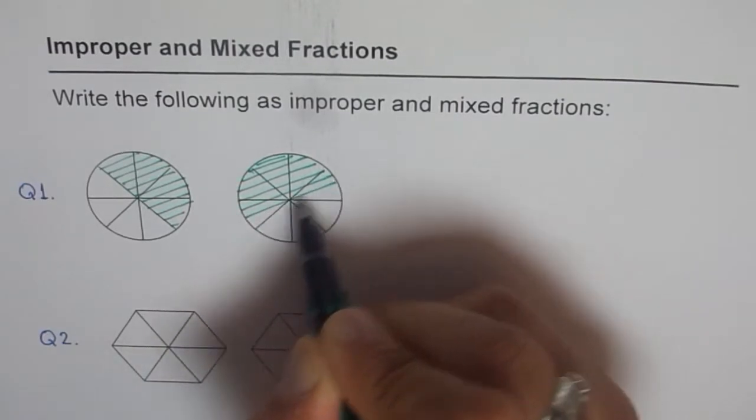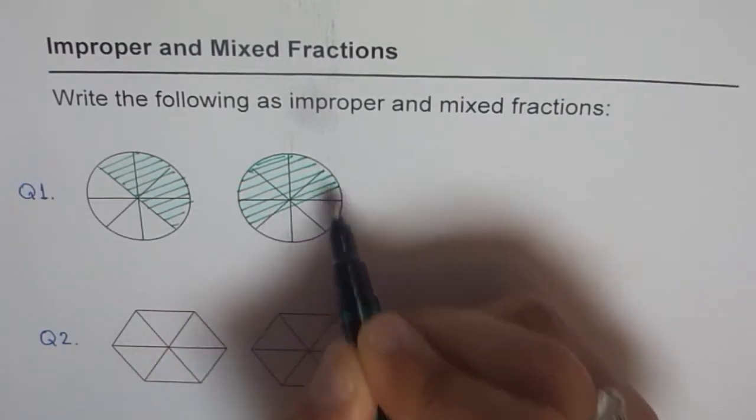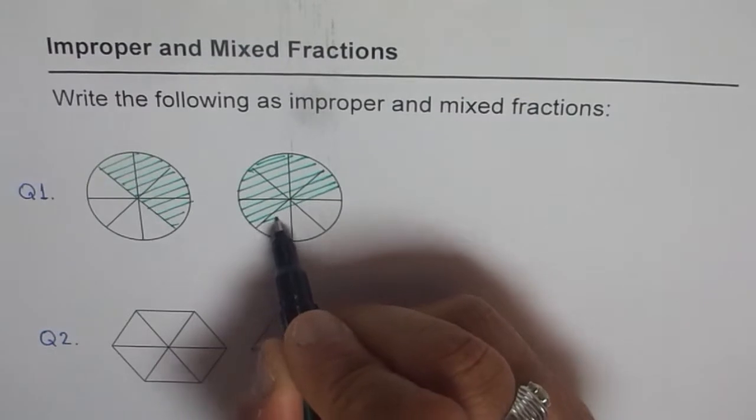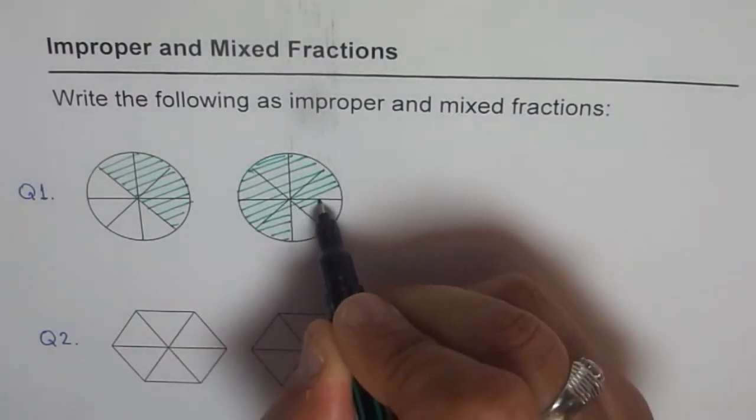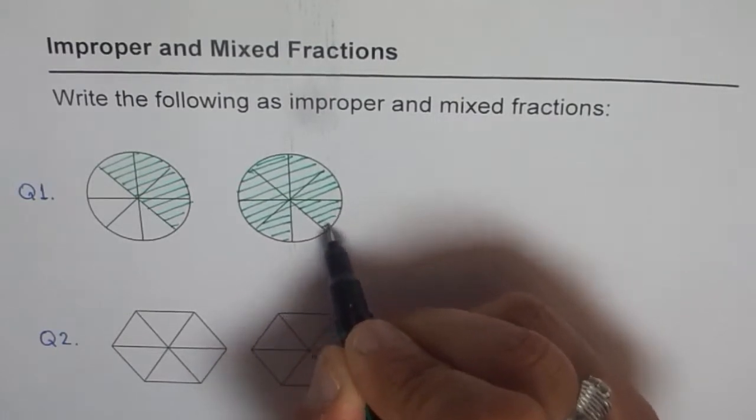Do you understand? We get more than a whole. So where do we land? We land into improper and mixed fractions.